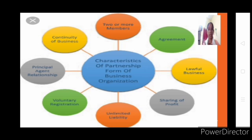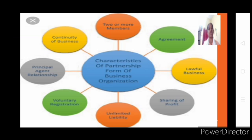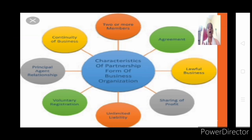Similarly, if B makes a good decision that results in profit for the firm, then A, C, D, E all get the profit because of B's right decision. So B becomes the agent binding everyone, and all others are considered principals. When A made a mistake he bound others — he was an agent. Now when B acts, A becomes the principal. This means in partnership all become agents and all become principals at different times.